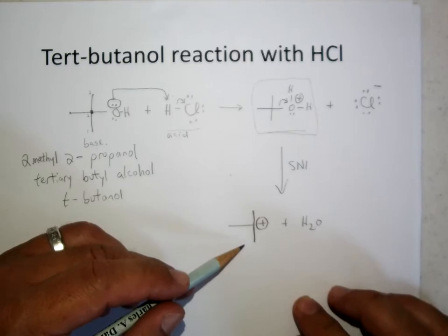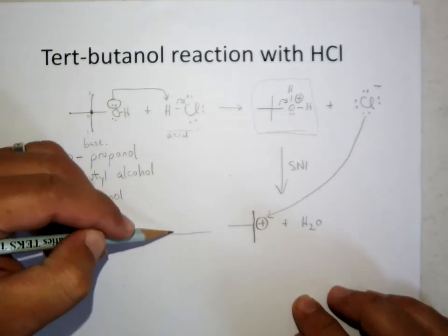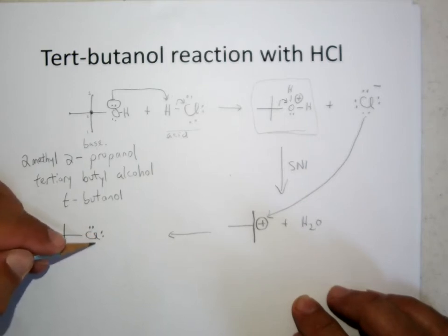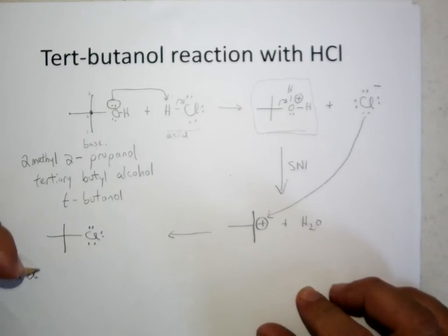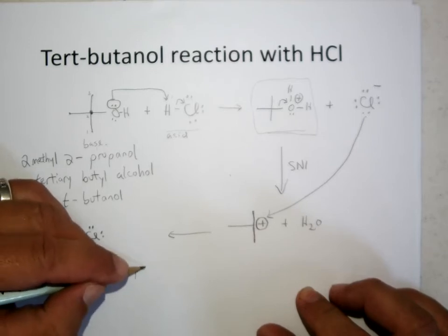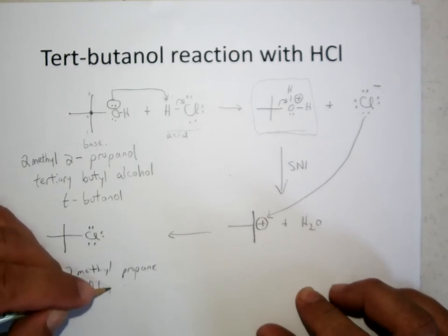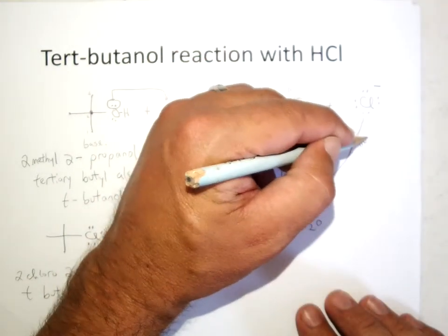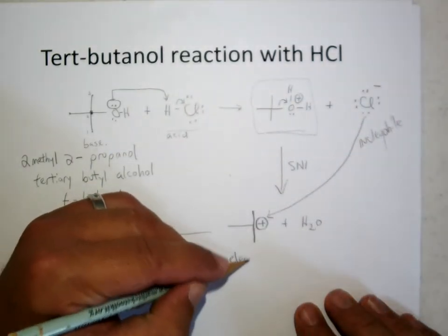And then once we have the tertiary carbocation, then this chlorine can go in and bond, and that will give us our tertiary butyl chloride, also known as 2-chloro-2-methylpropane, or tertiary butyl chloride, from the chloride nucleophile, reacting with the carbocation electrophile.